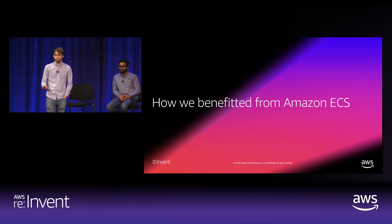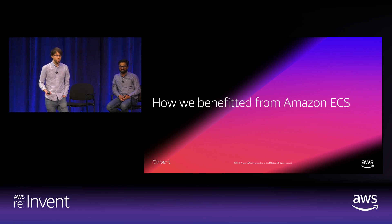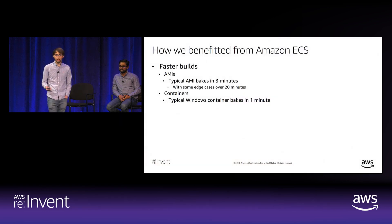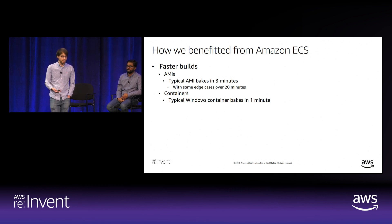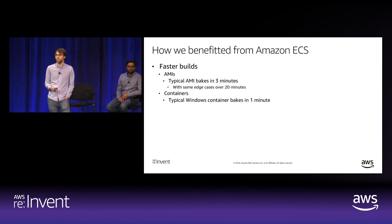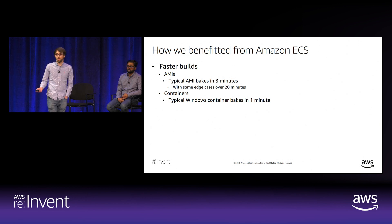Now that I've described how we deployed to Amazon ECS with CI/CD, let me describe how migrating actually benefited us. We saw the speed of our image builds increase: AMI bakes previously took at least 3 minutes, with some edge cases taking over 20 minutes. When building a Windows container with the WinTainerizer, typical builds complete in about one minute.